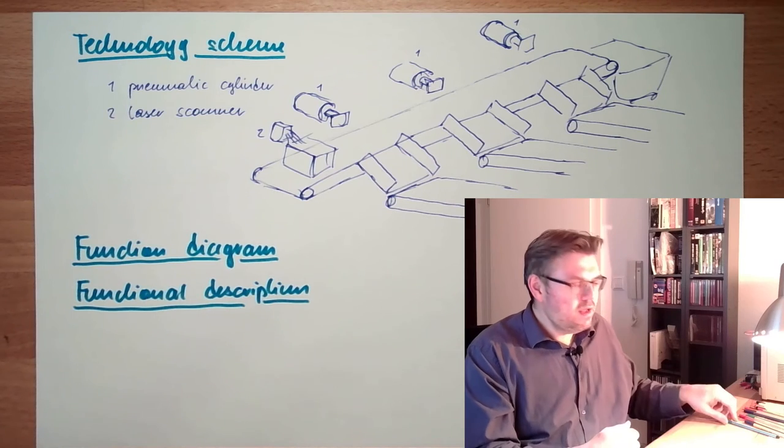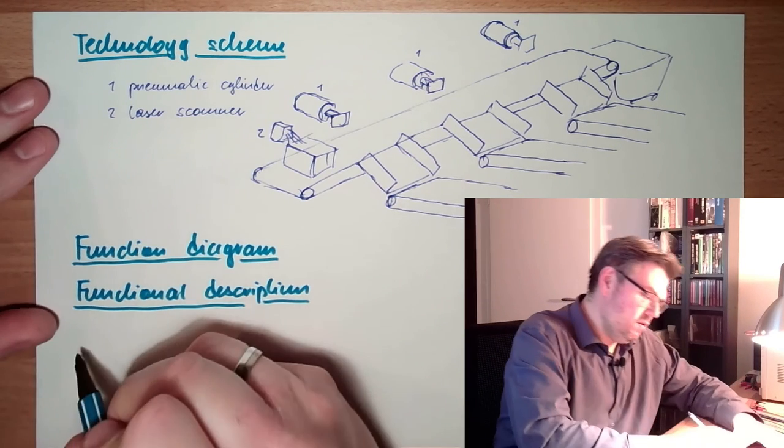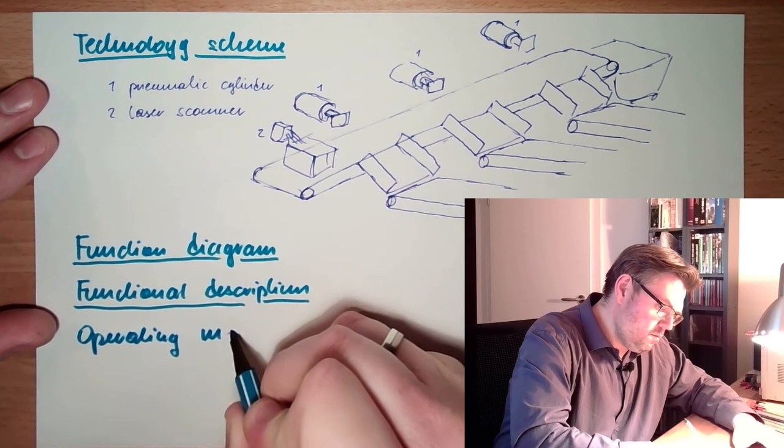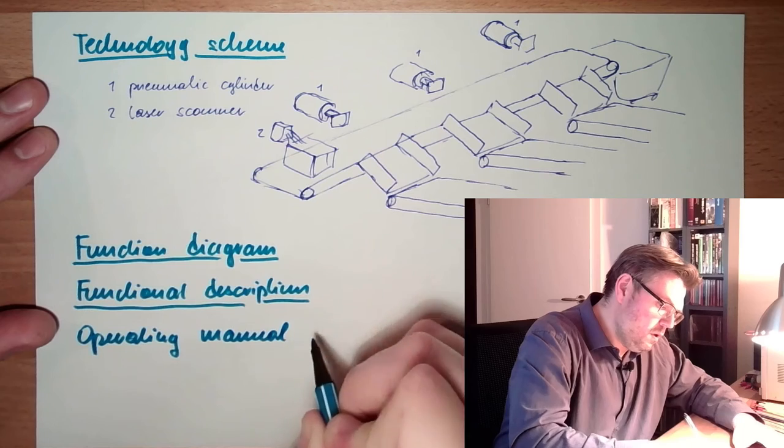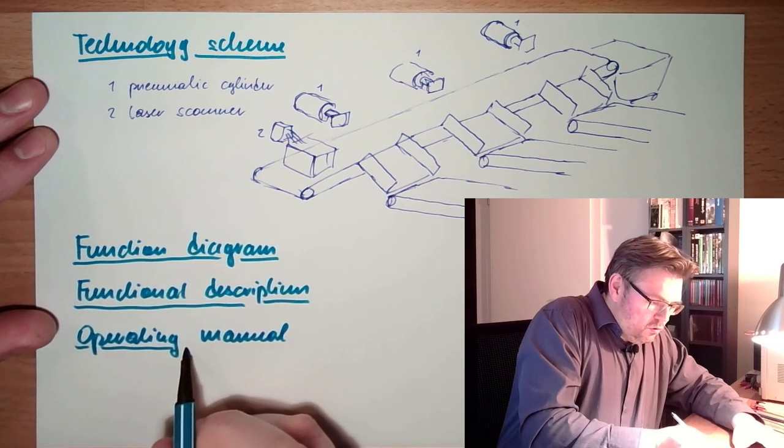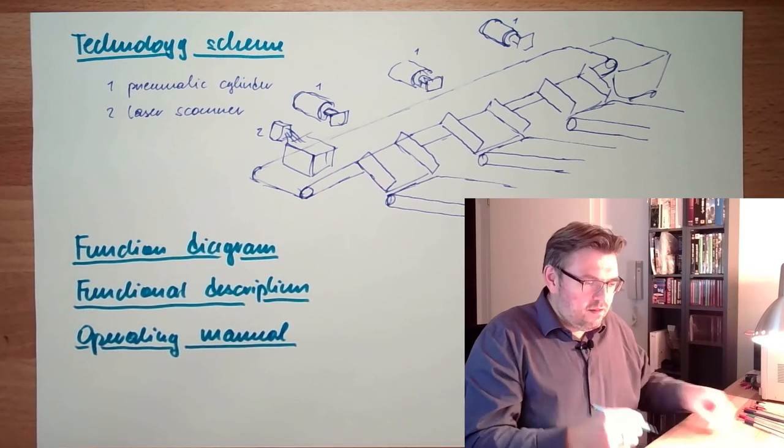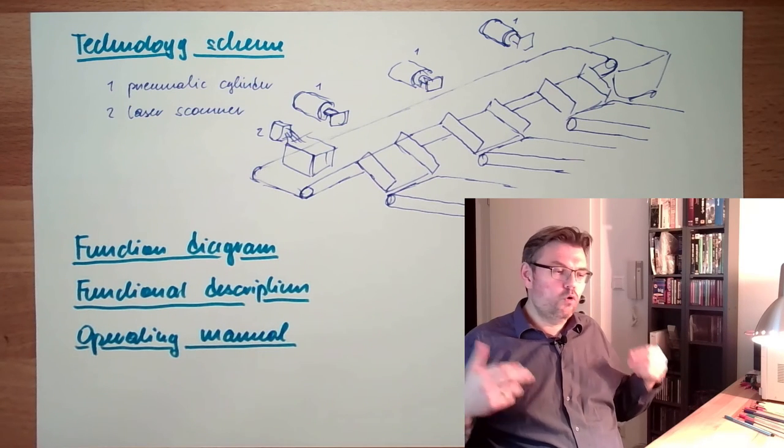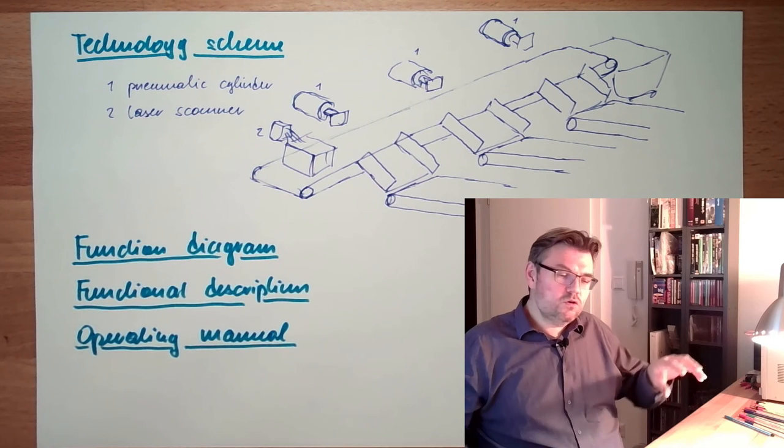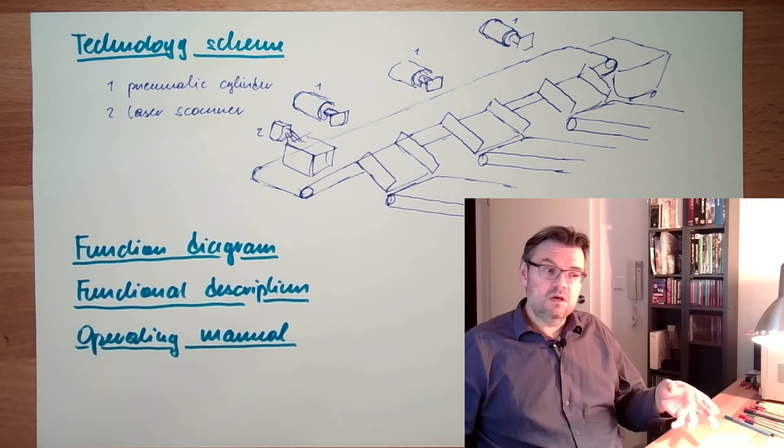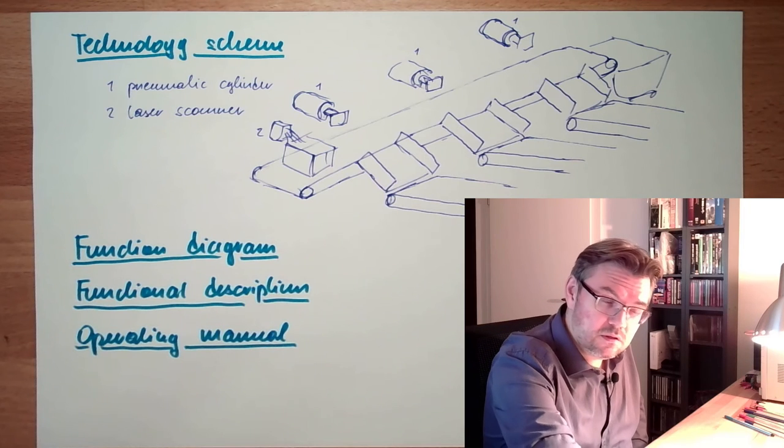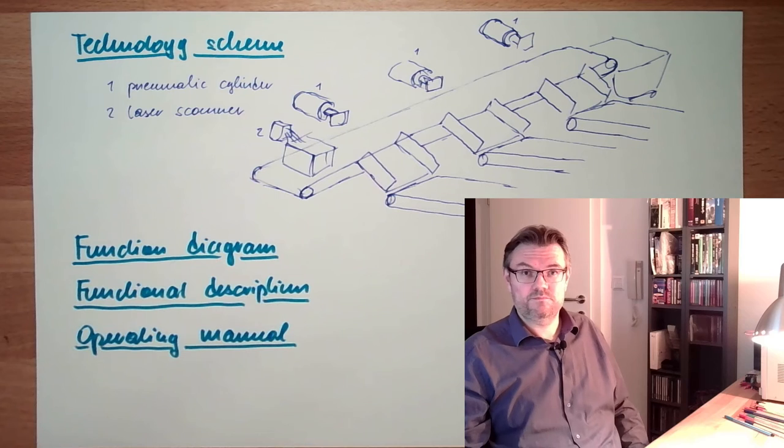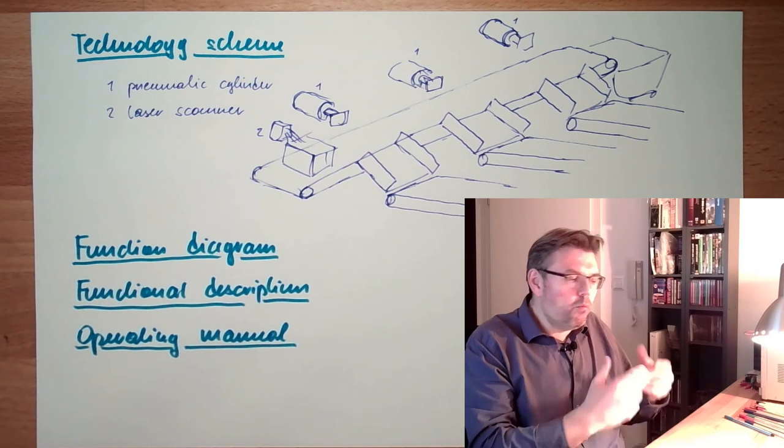There is somewhat like an operating manual. This is also describing the process, however from the viewpoint of an operator. What is done by the operator? Not so much what is done by the process, but what is done by the operator to operate the process, to keep the process within the desired limits. This would be the operating manual.